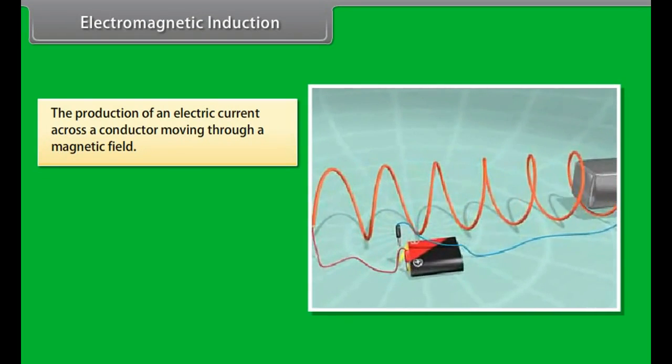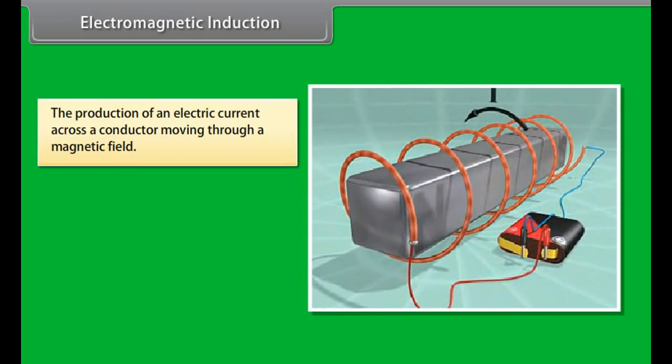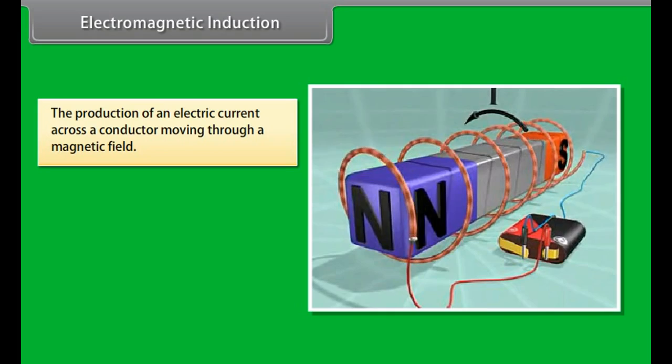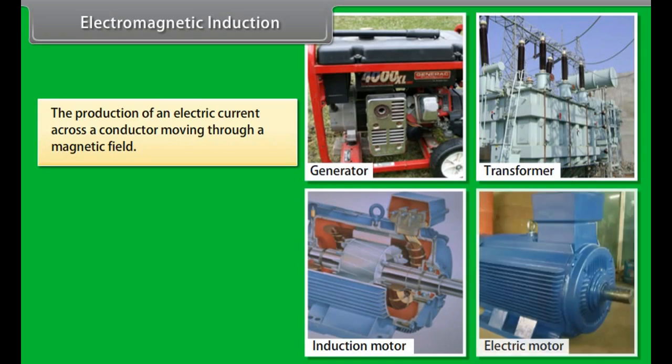Electromagnetic induction. The production of an electric current across a conductor moving through a magnetic field is called electromagnetic induction. For example, generators, transformers, induction motors, electrical motors, synchronous motors, and solenoids all use electromagnetic induction.